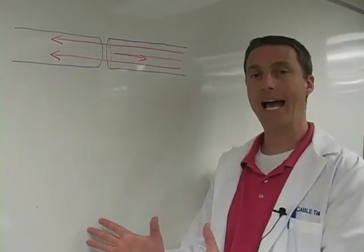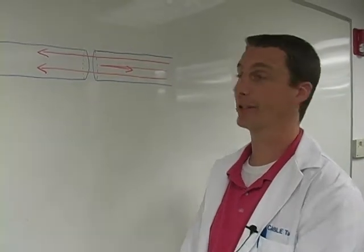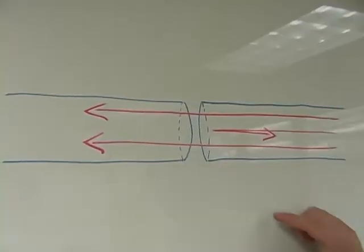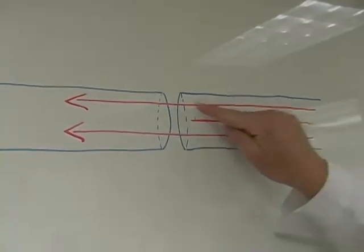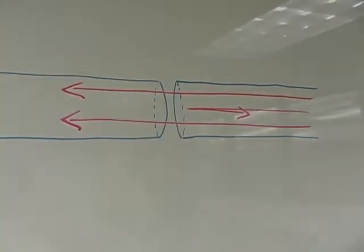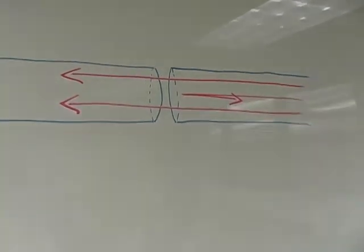The reason we have these different types of polish is about back reflection. Here is an illustration of two fibers mated together. Most of the time the light goes through from one fiber to the next as it should, but sometimes the light will bounce back. That's back reflection.